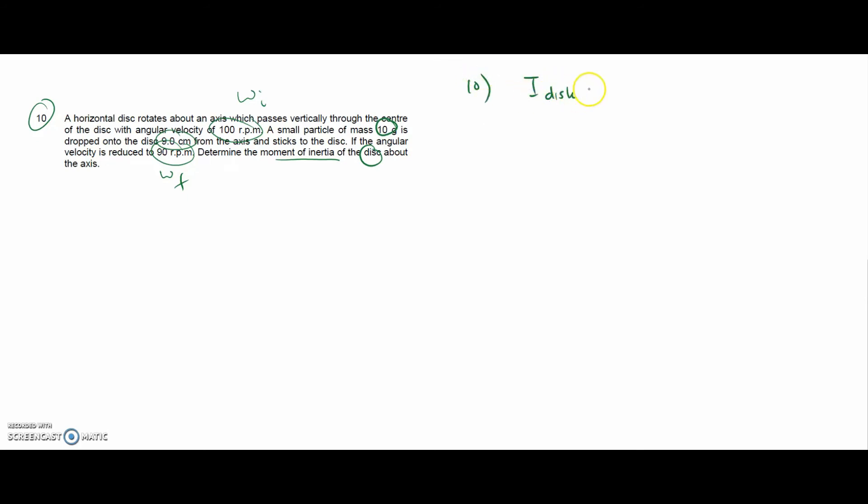Question 10: a horizontal disc rotates about a vertical axis through its centre at 100 rpm. A small particle of 10 grams is dropped onto the disc 9 cm from the axis and sticks. The angular velocity drops to 19 rpm. Determine the moment of inertia of the disc about the axis. We use conservation of angular momentum.